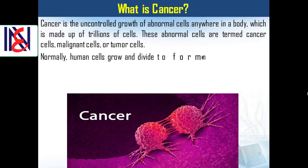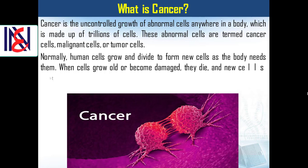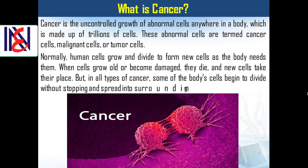Normally, human cells grow and divide to form new cells as the body needs them. When cells grow old or become damaged, they die and new cells take their place. But in all types of cancer, some of the body's cells begin to divide without stopping and spread into surrounding tissues.